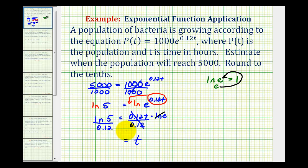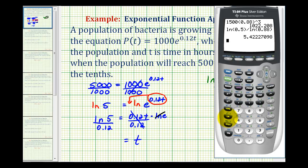On the left side we'll have to get a decimal approximation for this. So ln 5 divided by 0.12. So our time is approximately 13.4 hours.